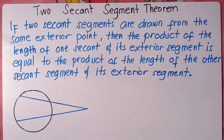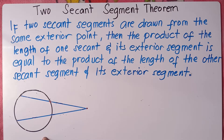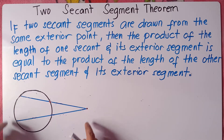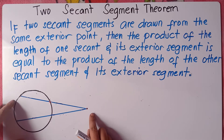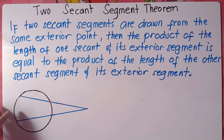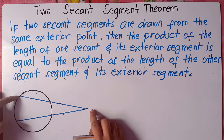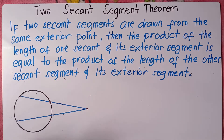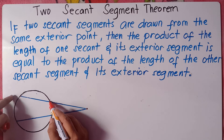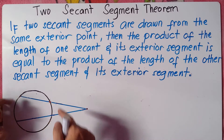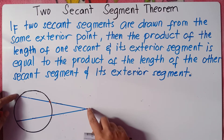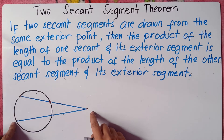So we have an illustration right here — a circle and two lines. We call this line a secant. A secant is a line that intersects a circle at exactly two points. This line right here is called a secant because there are two points within the circle where this line intersects. So we call this the first secant and this is the second secant.